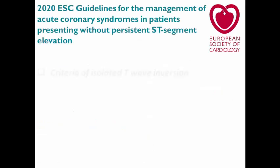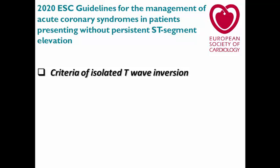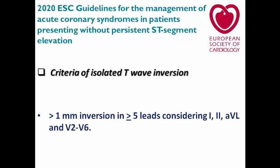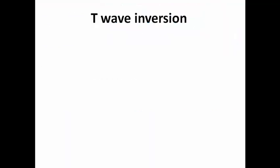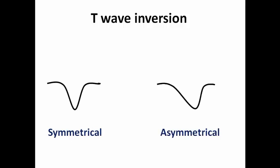In the 2020 guidelines for non-ST-elevation, the criteria for isolated T-wave inversion is more than one millimeter inversion in five or more leads, specifically leads I, II, aVL, and from V2 to V6. Just inversion of more than one millimeter is enough to diagnose non-ST-elevation acute coronary syndrome. Asymmetrical morphology is the normal morphology for T-wave whether it is upright or inverted, and when the T-wave is inverted and asymmetrical it suggests a strain pattern, whereas symmetrical T-wave inversion is suggestive of myocardial ischemia. It is considered deep when more than five millimeters.